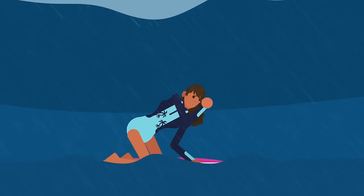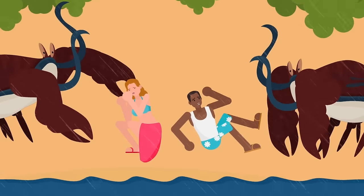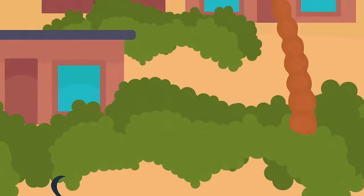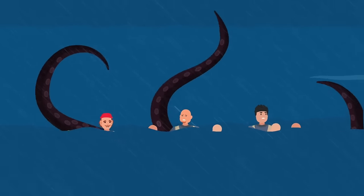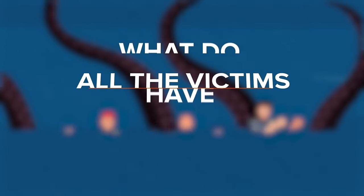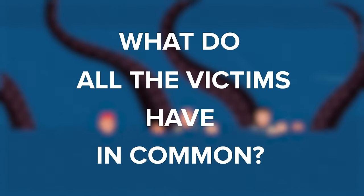Sharks attack and devour surfers. Giant coconut crabs rip up beach parties to pieces. Whales smash boats full of people. Giant stinging tendrils from the depths reach up to claim victims who feel oh so safe. But what do all the victims have in common?